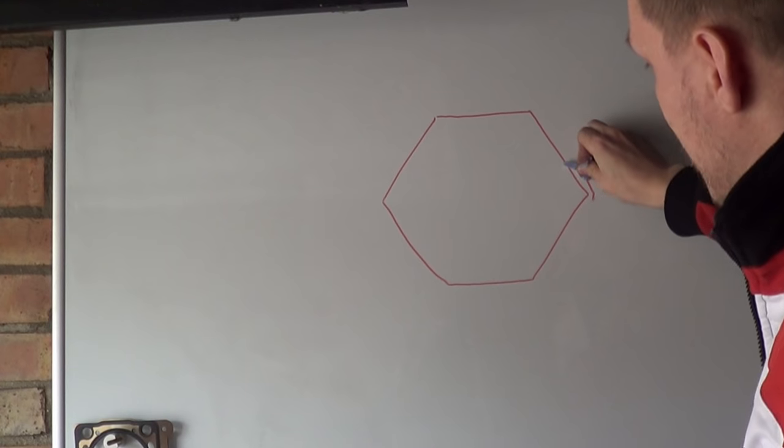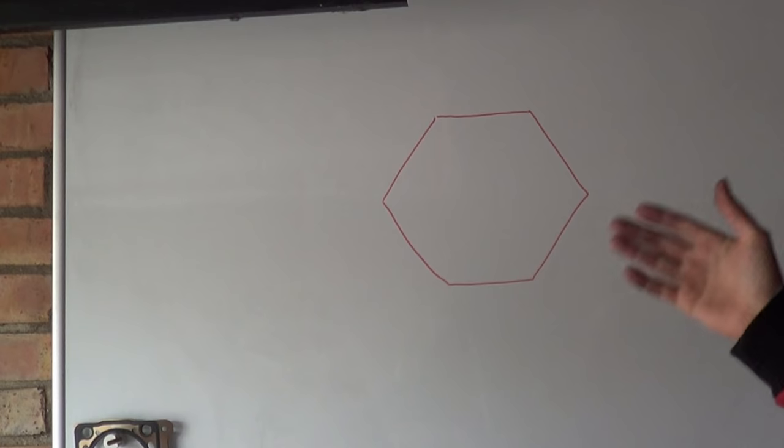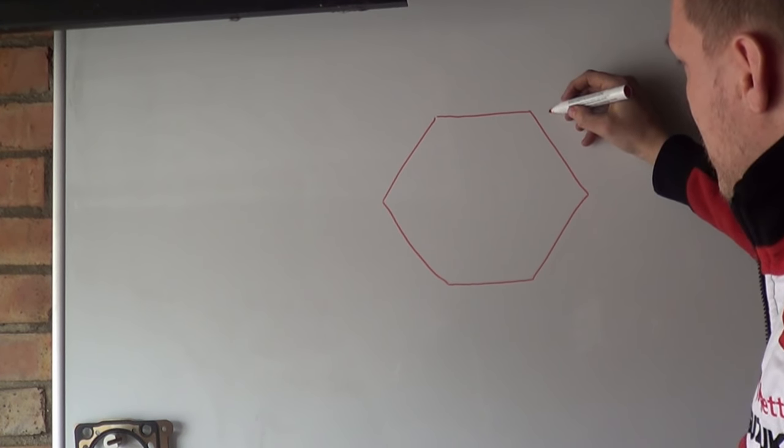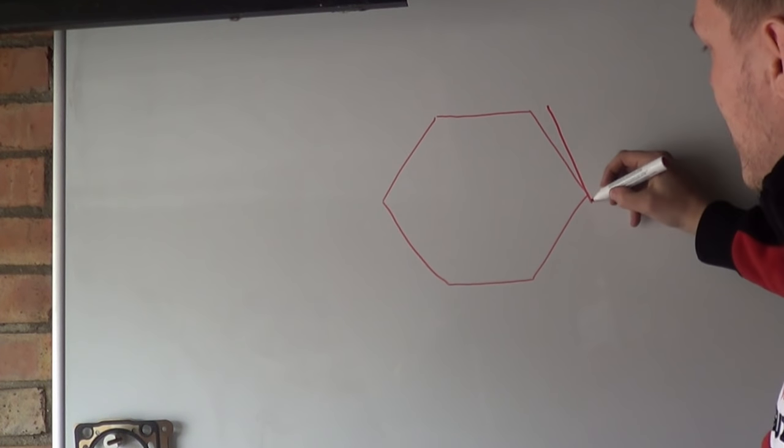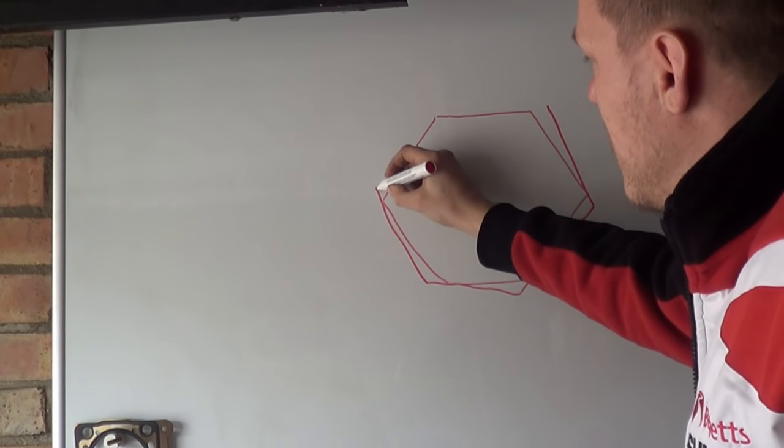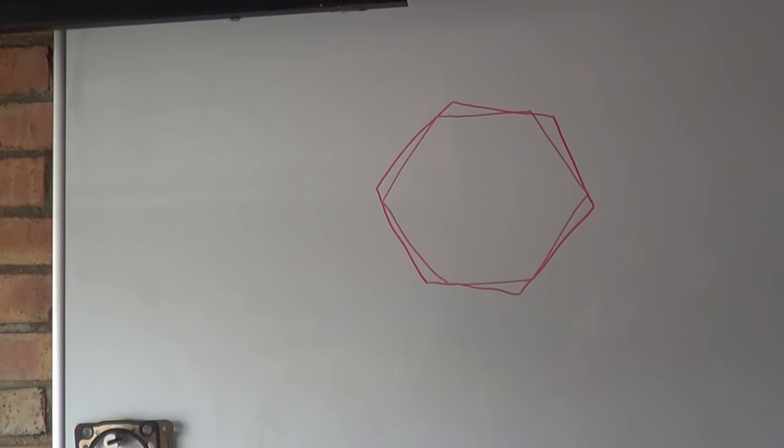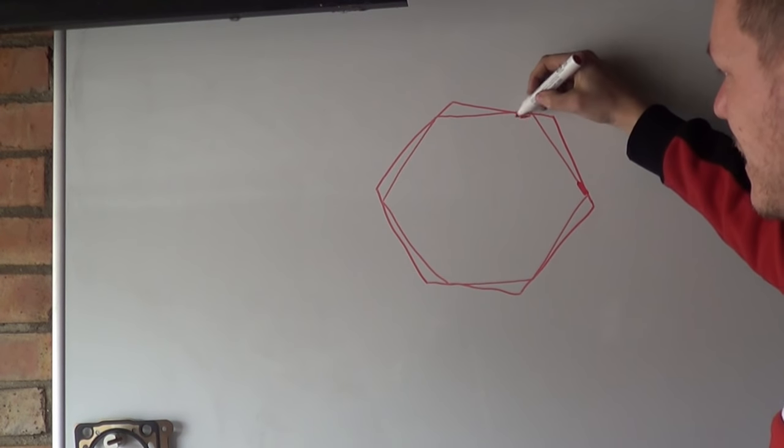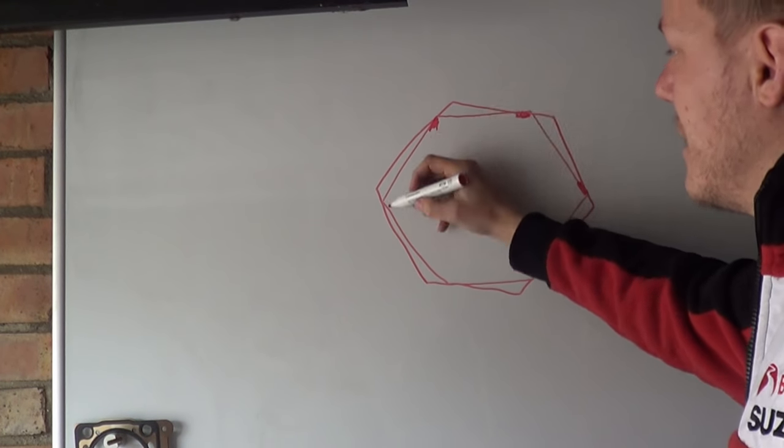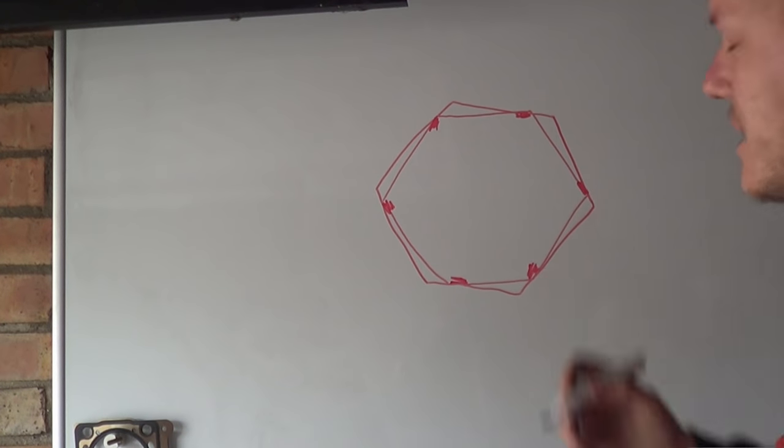The problem with this is what happens when you apply torque. Obviously you're turning your socket and the bolt stays stationary. So what happens is your socket ends up doing this. Like so. That's a crap drawing, isn't it? Like this. So as you can see, your contact patch is here, here, here, here, and here, and here. Six of them, obviously.